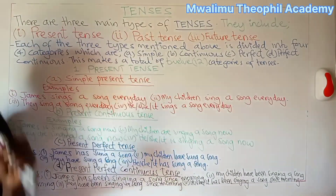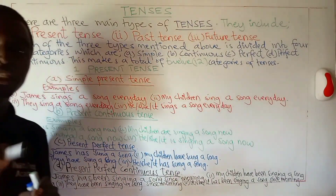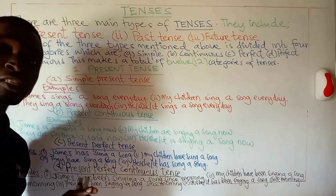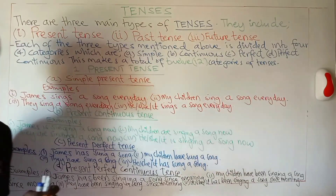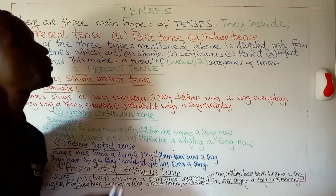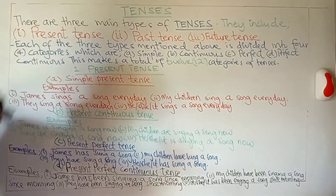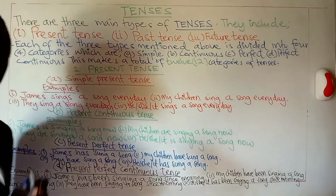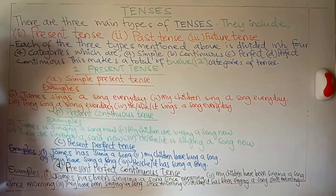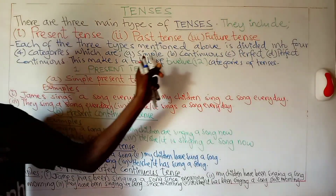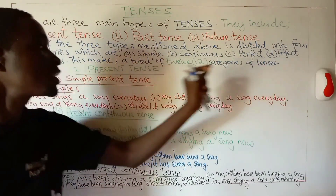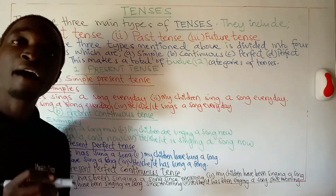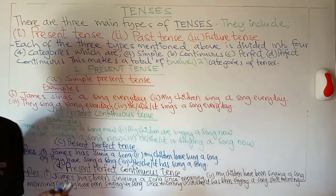Welcome again to Manitofila Kade. Today I'm going to teach on tenses. There are three main types of tenses: present tense, past tense, and future tense. Each of these three types is divided into four categories: simple, continuous, perfect, and perfect continuous. This makes a total of twelve categories of tenses.